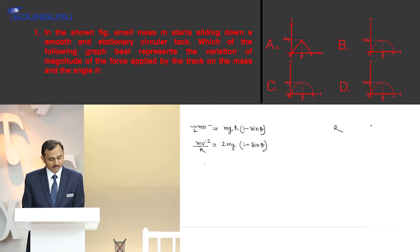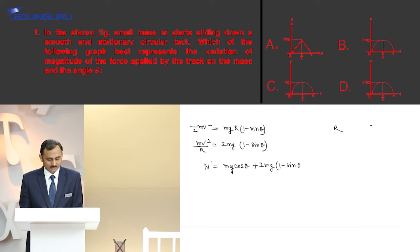So N dash equals mg cos theta plus 2mg times 1 minus sin theta.